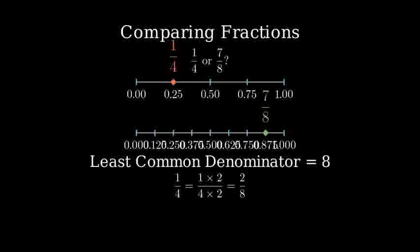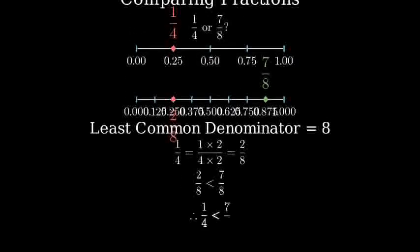Now we can directly compare 2 eighths and 7 eighths. Let's mark 2 eighths on our bottom number line. Since 2 is less than 7, 2 eighths is less than 7 eighths.